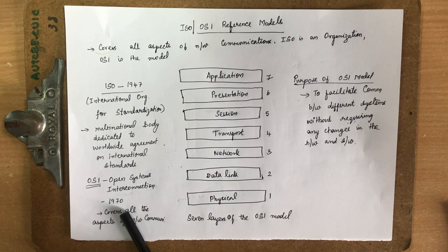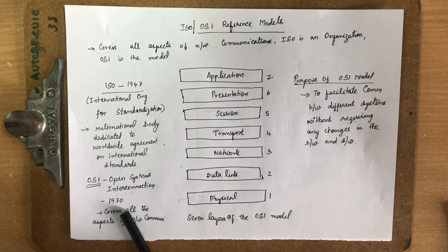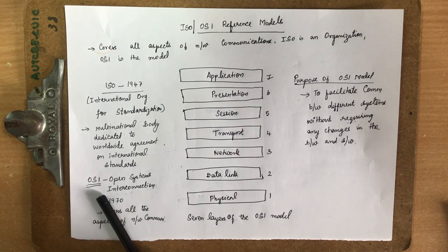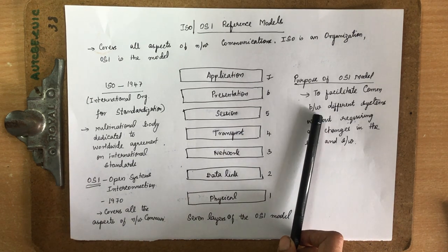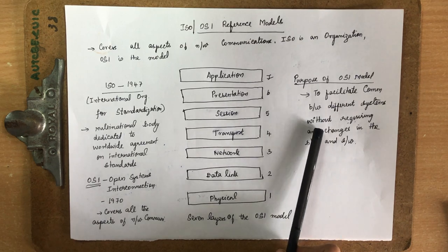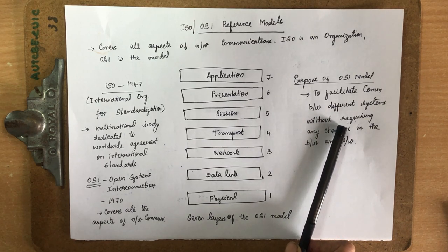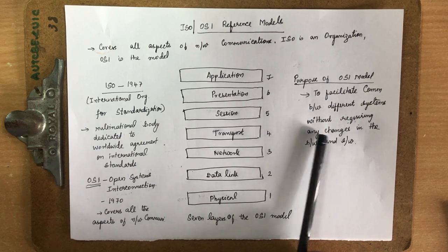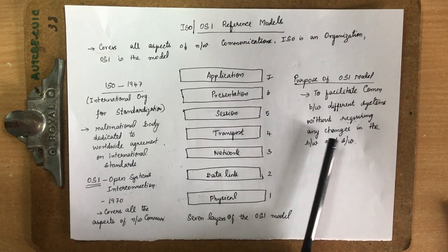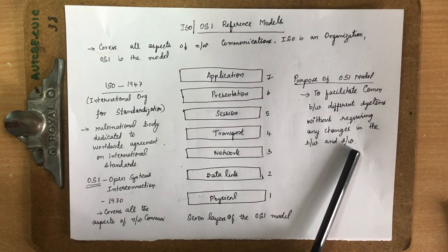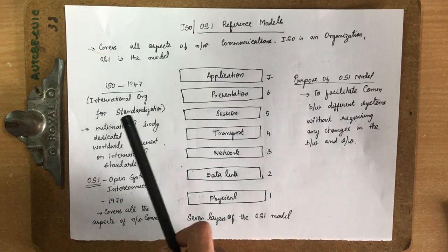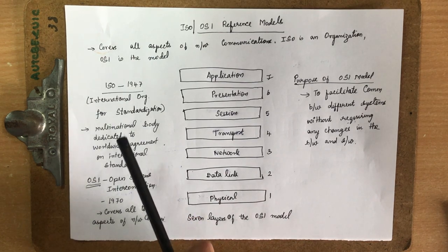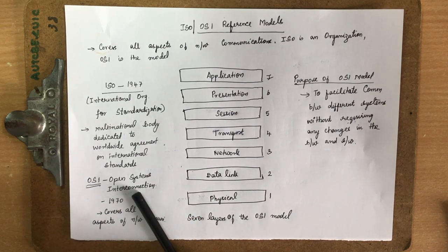When any two open systems want to communicate, they have to follow the OSI model. The purpose of this OSI model is to facilitate communication between any two open systems without requiring any changes in the hardware and software. So ISO is an organization and OSI is a model.